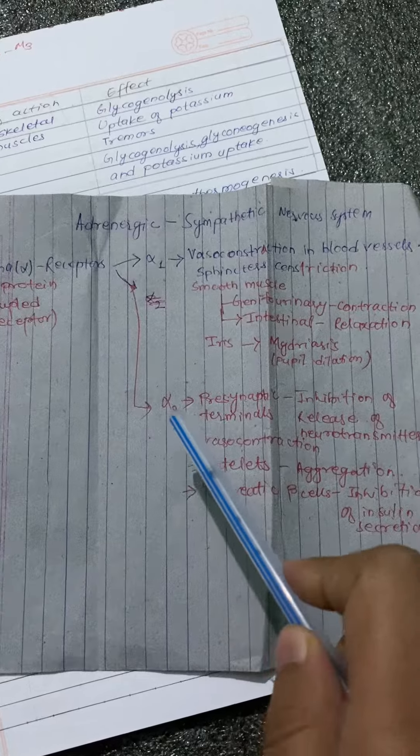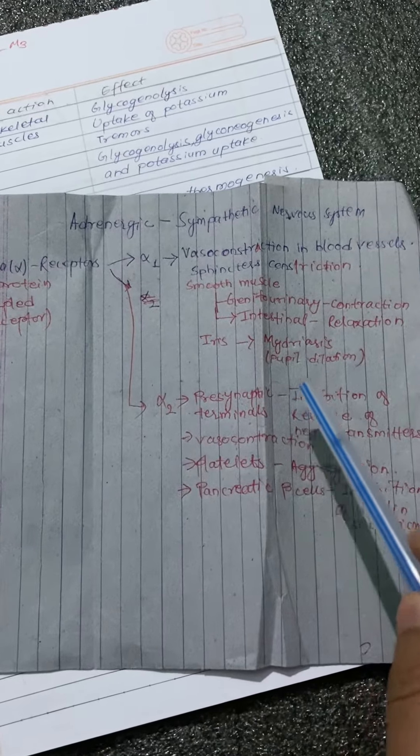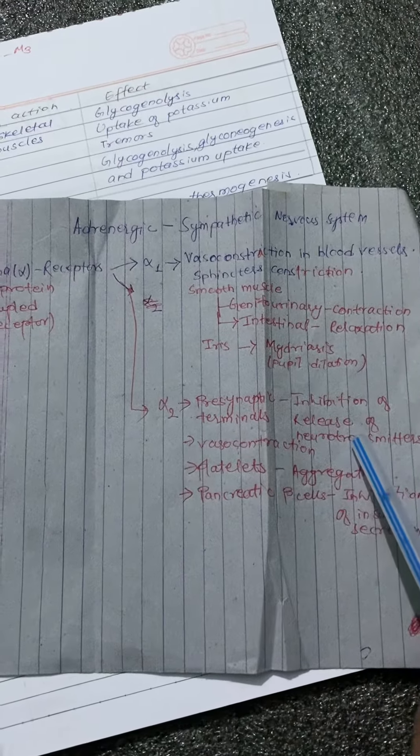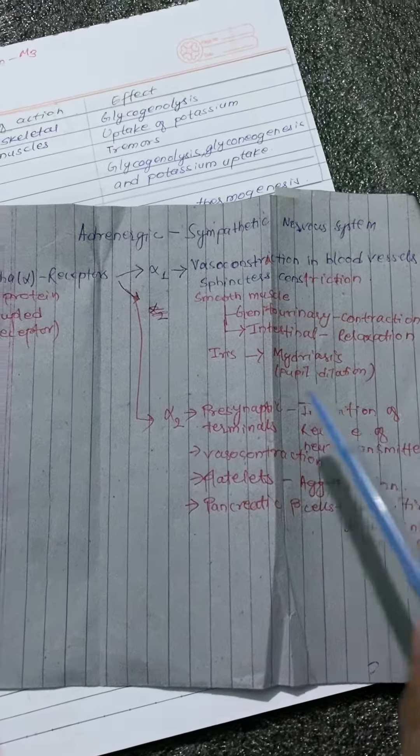In case of alpha 2 receptors, it causes inhibition of release of neurotransmitters in presynaptic terminals. It causes vasoconstriction. It causes platelet aggregation. It causes inhibition of insulin secretion in pancreatic beta cells.